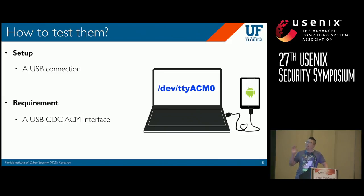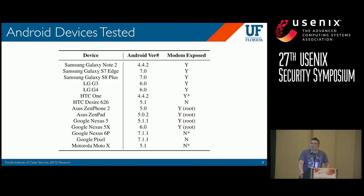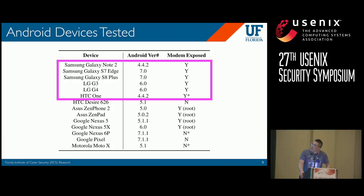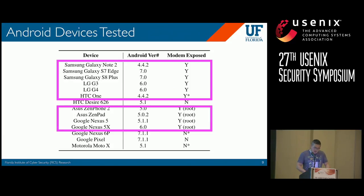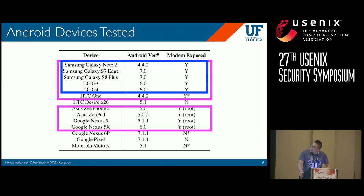This USB switcher was initially designed for Samsung phones, and we extended it to support other vendors. Once the setup was ready, we implemented automation scripts to send out AT commands and collect responses from the phones. To answer how many phones actually have this USB modem interface, we examined 14 different Android devices. Six exposed the modem interface by default, and four could expose it after being rooted. Among these ten devices, we chose eight to test against AT commands: three Samsung, two LG, two Asus, and one Nexus.